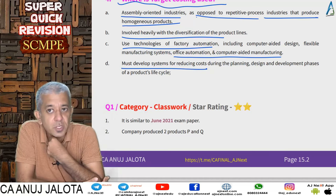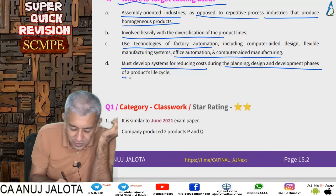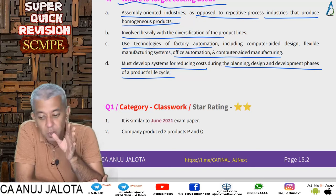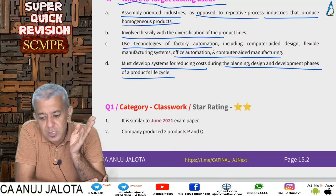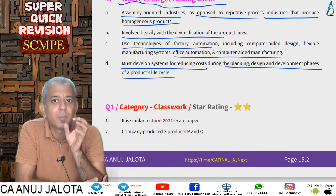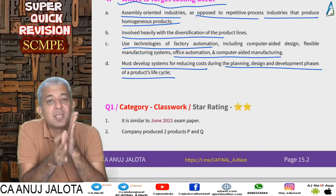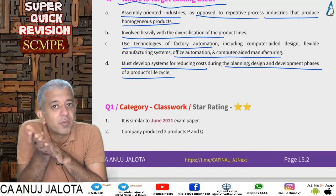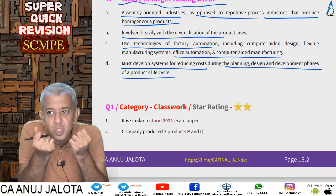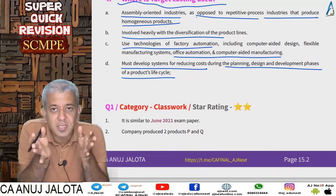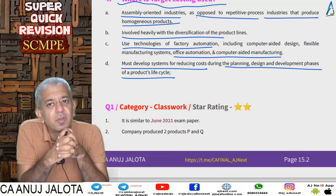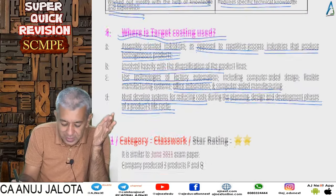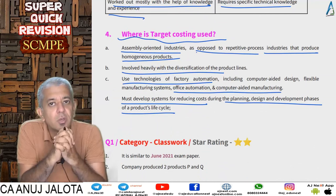Companies must develop systems for reducing cost during the planning, design, and development phases of the product life cycle. The workforce and systems must be flexible and open to change; if workers are rigid and not open to changing processes, implementing target costing becomes very difficult. This was an introduction to target costing. In the next lecture, we will start with questions on target costing.